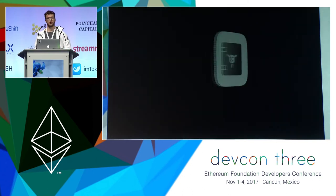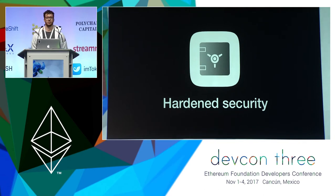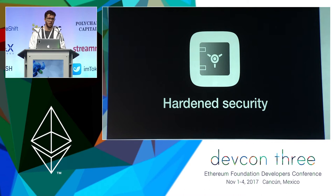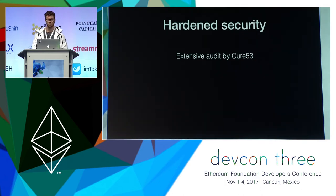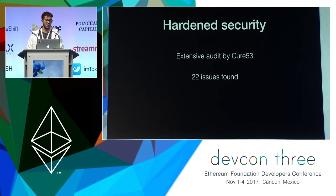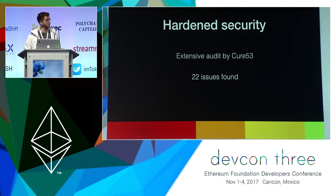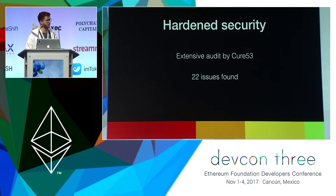Let's get to the delivered features this year. First and foremost, our main concern is security, because we have a browser that handles private keys — it's not as simple as a website that doesn't handle money. We made an extensive audit by Q53, a really skilled German company. They managed to find 22 issues with varying severity levels — critical, high, medium, and low — and all of those were fixed by us. We also increased our test suite, so no regressions.